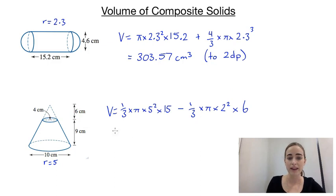So if we pop all of that in your calculator and round to two decimal places again we'll end up with 367.57 centimetres cubed to two decimal places.